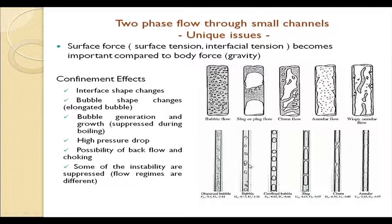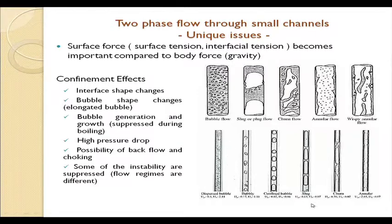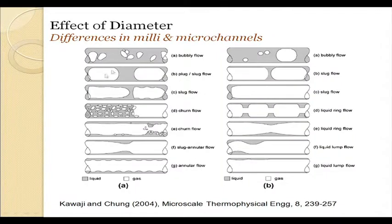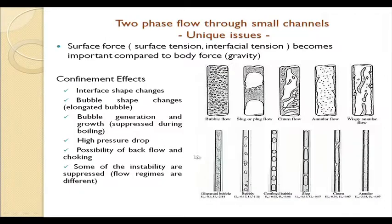What did we observe? We observed that in this particular case body forces are negligible as compared to surface tension forces. For that case, stratification is suppressed as we have already discussed. There is less effect of channel orientation, and the influence of channel orientation decreases with pipe diameter. This was evident when we compared the flow patterns in the vertical micro channel with the flow patterns in the horizontal milli channel — we found that more or less the same flow patterns are present.